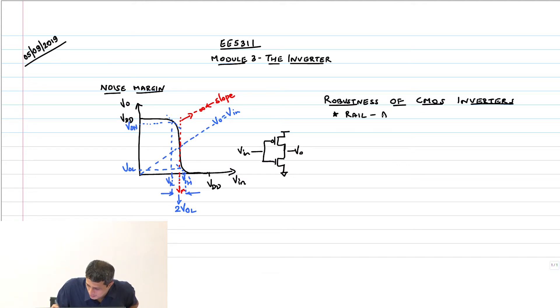Rail to rail voltage swing means logic 0 is ground, logic 1 is V_dd. But for that small leakage current which is really negligible, this is definitely true. When the input is 0 output is V_dd, when the input is V_dd output is 0.